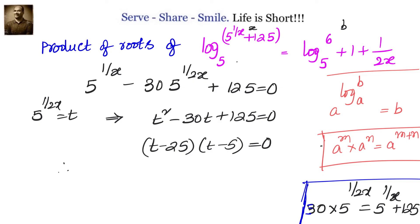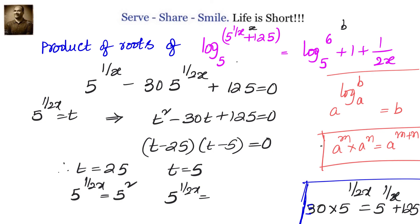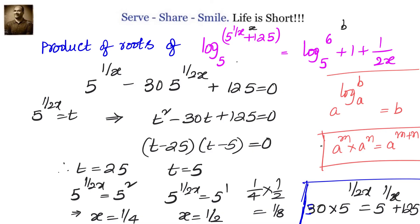That can be written as (t minus 25)(t minus 5) equals zero. So t equals 25 or t equals 5. Since t equals 5 to the power of 1/2x: when t equals 25, we get x equals 1/4, and when t equals 5, we get x equals 1/2. Therefore the product of roots is 1/4 times 1/2, which equals 1/8.